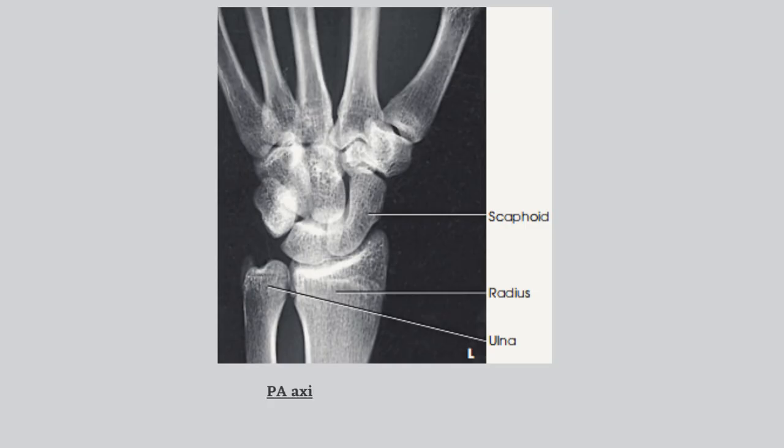Here we have the x-ray image of PA axial wrist for scaphoid, Stecker method.